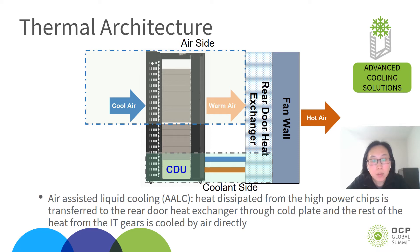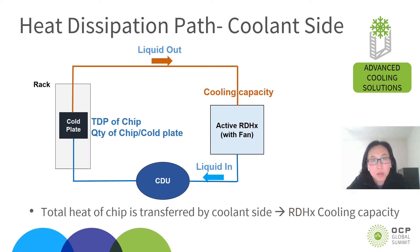At the thermal architecture level, it is an L-assisted liquid cooling system, which means the heat dissipated from high-power components such as the CPU and GPU is transferred to the rear-door heat exchanger through cold plate. The other heat from the IT gales is cooled by air directly. The coolant going through the cold plate in each chassis carries the hot heat from the major heat components such as the CPU and GPU, then goes through the rear-door heat exchanger to reduce the temperature, and is pumped through the coolant distribution unit and back to the cold plate. The cycle continues.